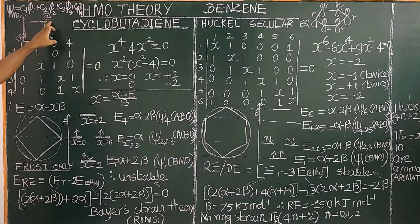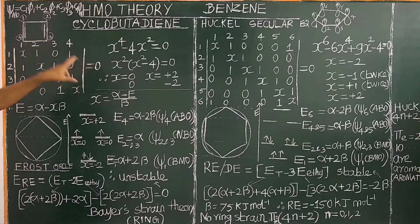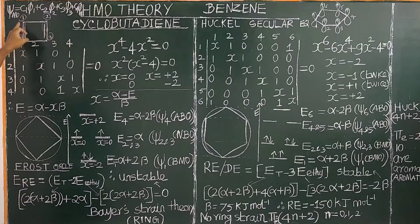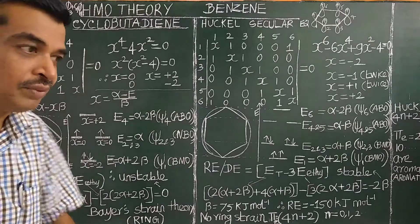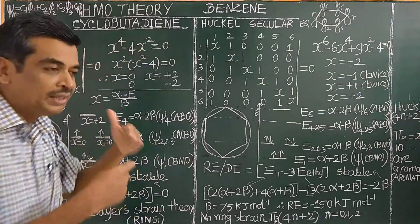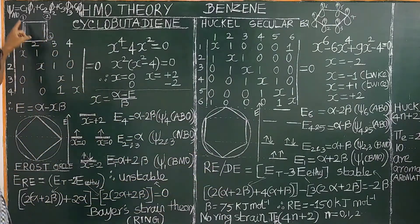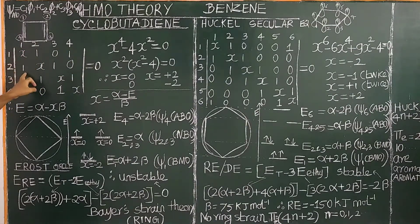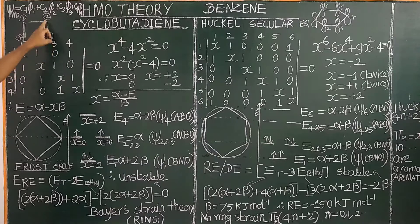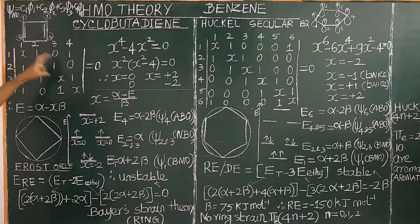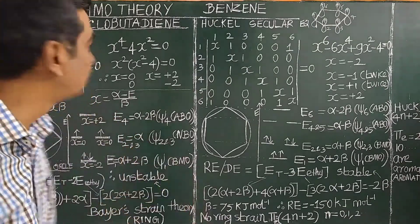Next, 1 and 2 are neighbors, therefore the off-diagonal element is 1. But 1 and 3 are not neighbors — if i and j are not neighboring carbon atoms, then H_ij = 0. Now 1 and 4 are neighbors in the case of cyclobutadiene, whereas in 1,3-butadiene (a linear compound), 1 and 4 are not adjacent so the element is 0. But here, 1 and 4 is 1. Similarly, 2 and 3 are adjacent so 1, and 2 and 4 are not adjacent so 0. After filling all elements, the Hückel secular determinant is constructed.